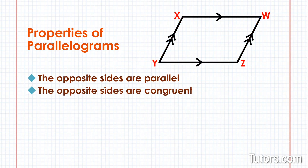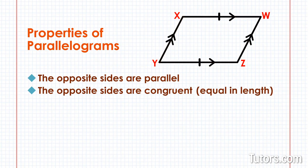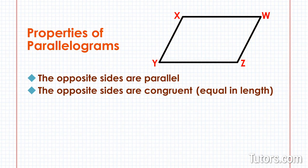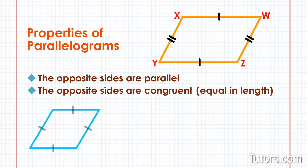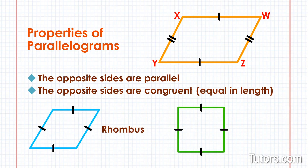The opposite sides are also congruent. The base side YZ and the top side WX of our parallelogram are equal in length — congruent. The left side XY and the right side ZW are also congruent. To be a parallelogram, the base and top sides must be parallel and congruent, and so must the left and right sides. The two pairs of congruent sides may be, but do not have to be, congruent to each other. If both pairs are congruent, you have either a rhombus or a square.